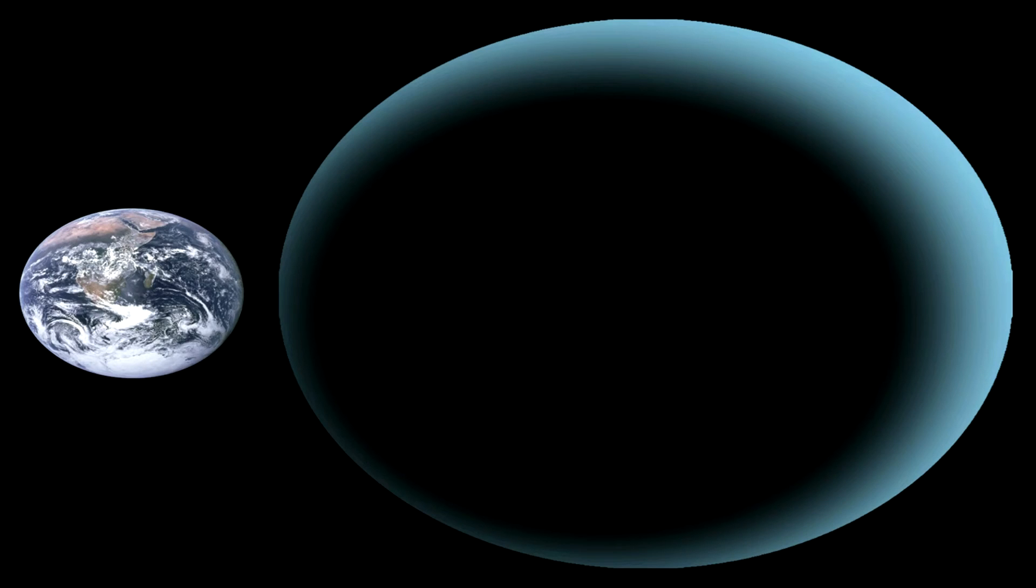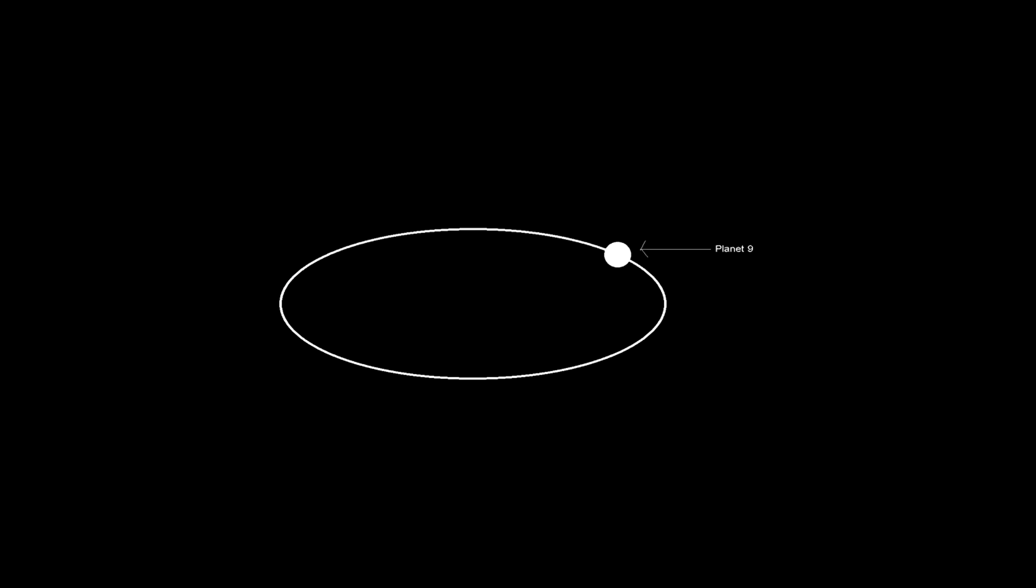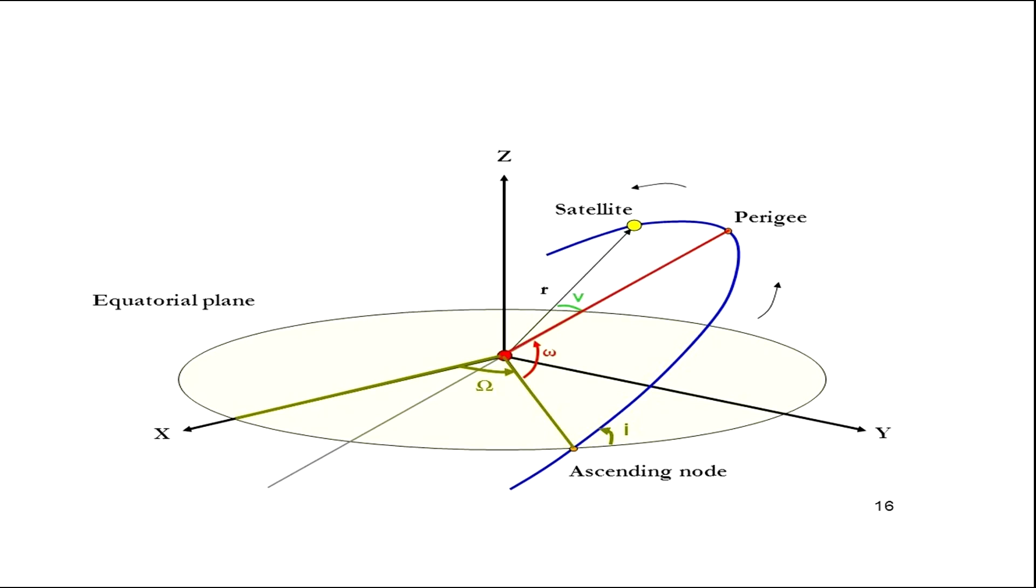Planet 9 is around 10 times the mass of the Earth, and its orbit is very elliptical. By elliptical, I mean it is an ellipse-shaped orbit rather than a circular one, and its orbit is also tilted, which means that its orbit is not in the plane where other planets orbit. In this picture, the orbit in blue is tilted.